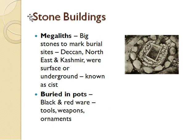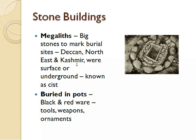The next topic is stone buildings. There were a type of stone buildings found called megaliths. 'Mega' means big and 'lithos' means stone — so megaliths are big stones used to mark burial sites. These were found in the Deccan, Northeast, and Kashmir. Some surfaces were underground, known as cists. Bodies were buried in pots along with black and red ware, tools, weapons, and ornaments.